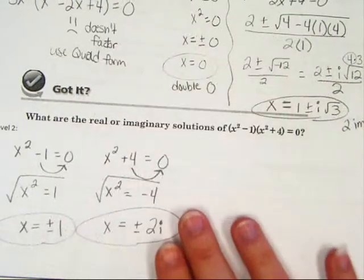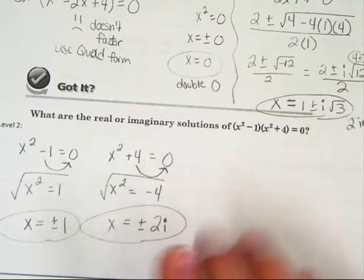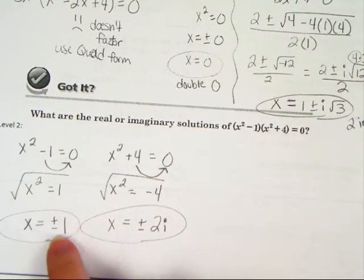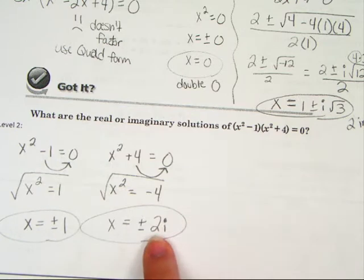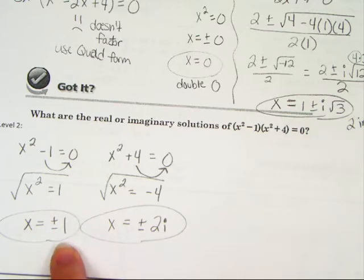Now, if you're wondering, what does this mean on a graph? This means that on your graph, it will cross at positive and negative 1. And those are the two places it crosses. It won't cross at positive and negative 2, because those are imaginary. So on your graph, it will cross two times, once at positive 1 and once at negative 1.